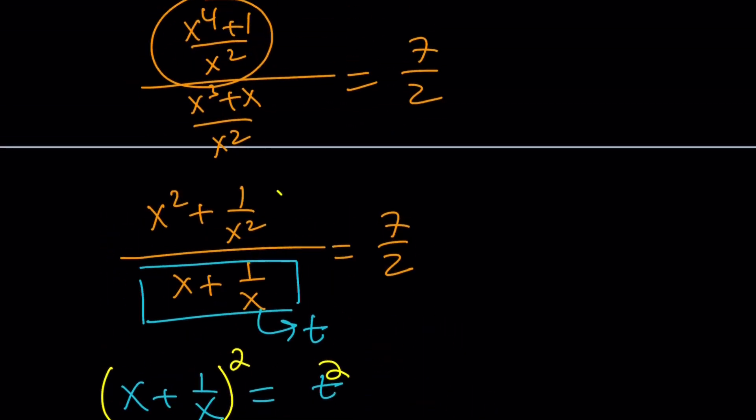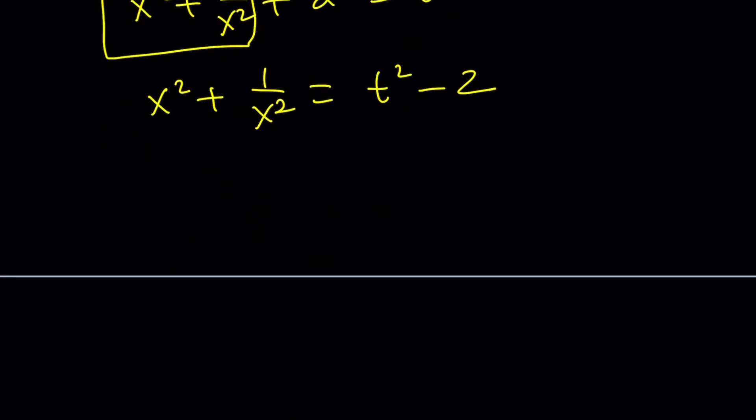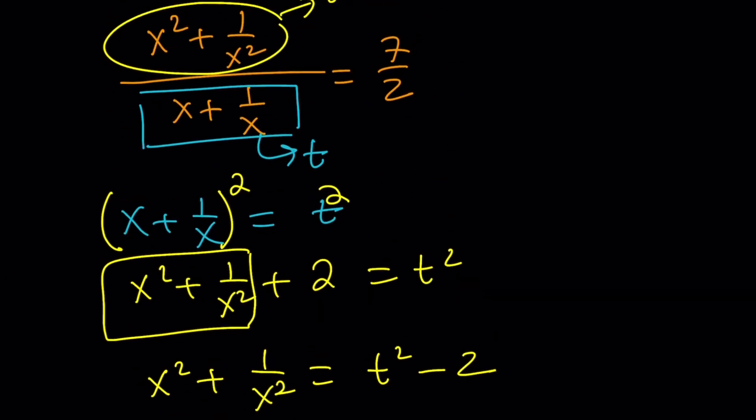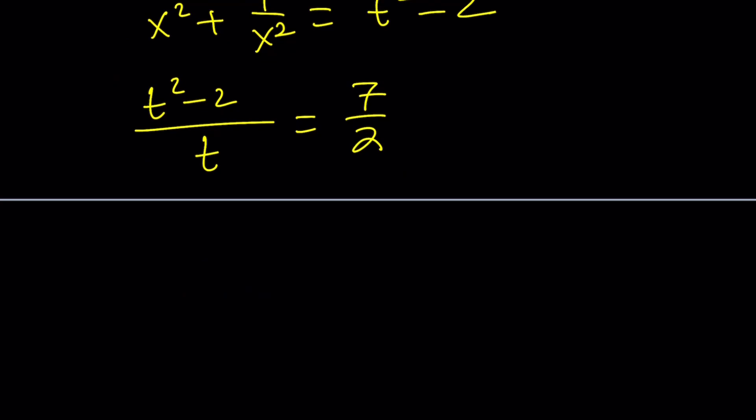So now I can go ahead and replace the top with t squared minus 2. So this becomes t squared minus 2. And guess what? I ended up getting a quadratic equation. Let's go ahead and write it down. t squared minus 2 divided by t equals 7 halves. You see how things simplify when you do the right substitution. But of course, you had to manipulate it first. You can't do this right away.